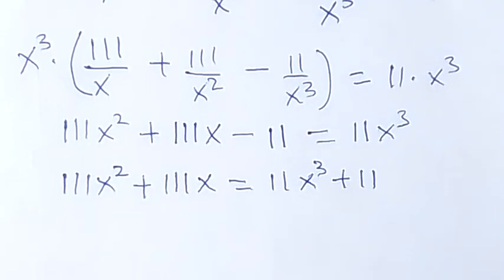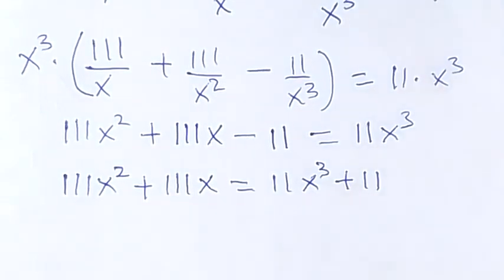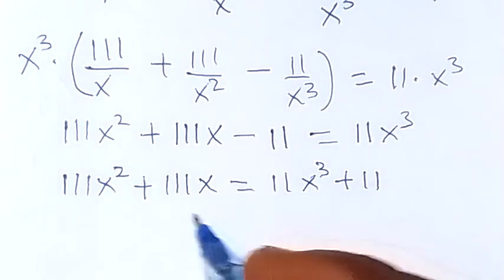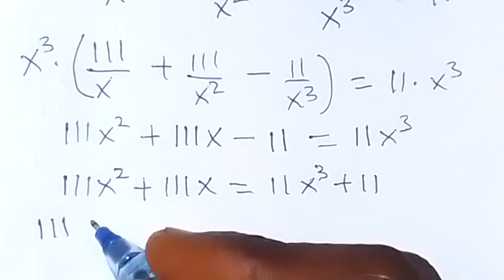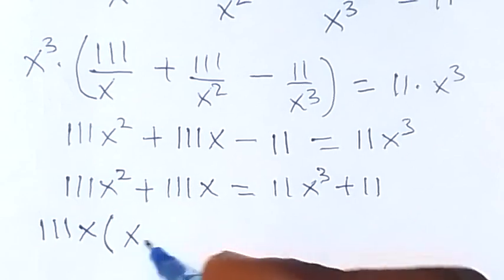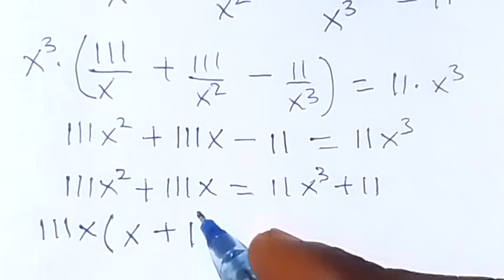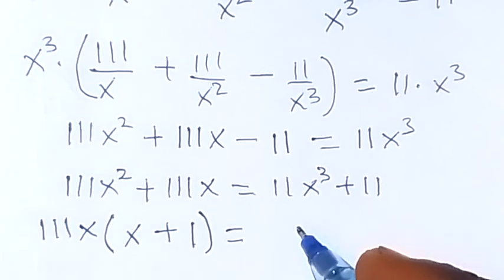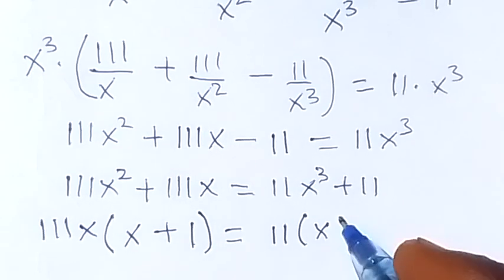From here we can factor what is common out. On the left-hand side, x is common — let's take it out. We have x, then in brackets what is left is x plus 1, which equals 11 taken out on the right side.